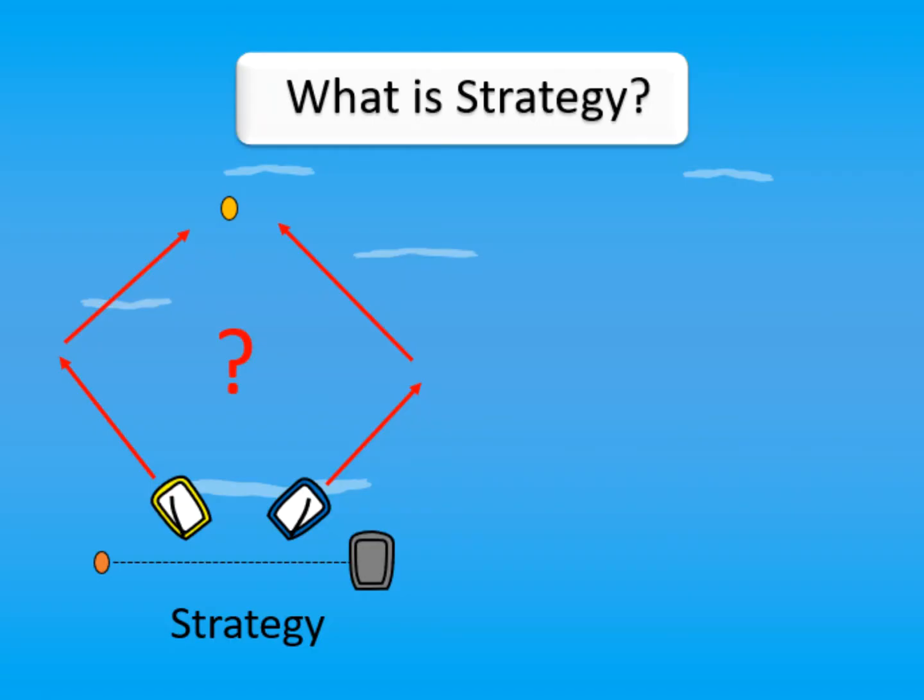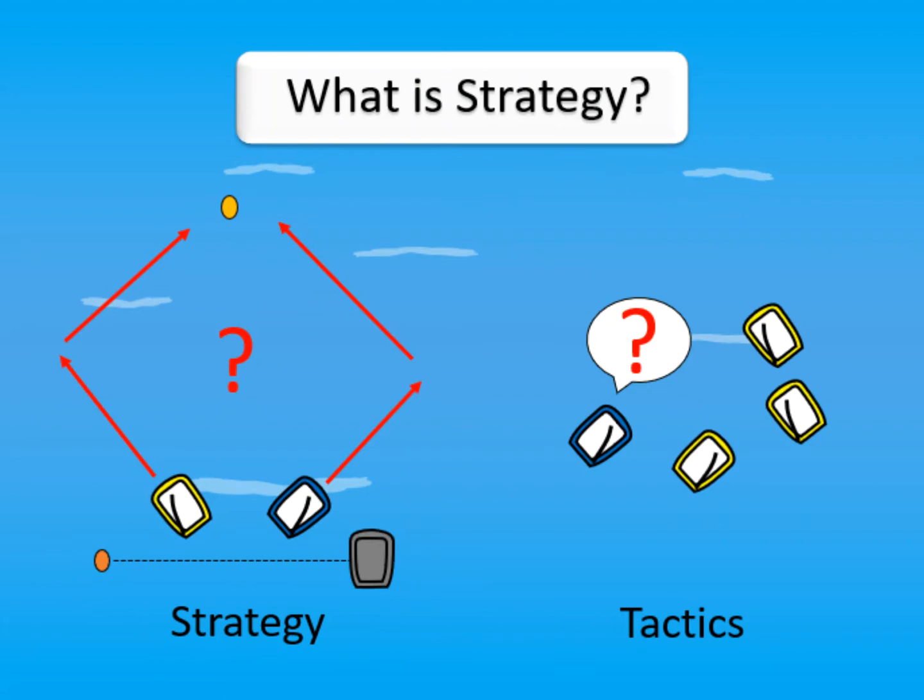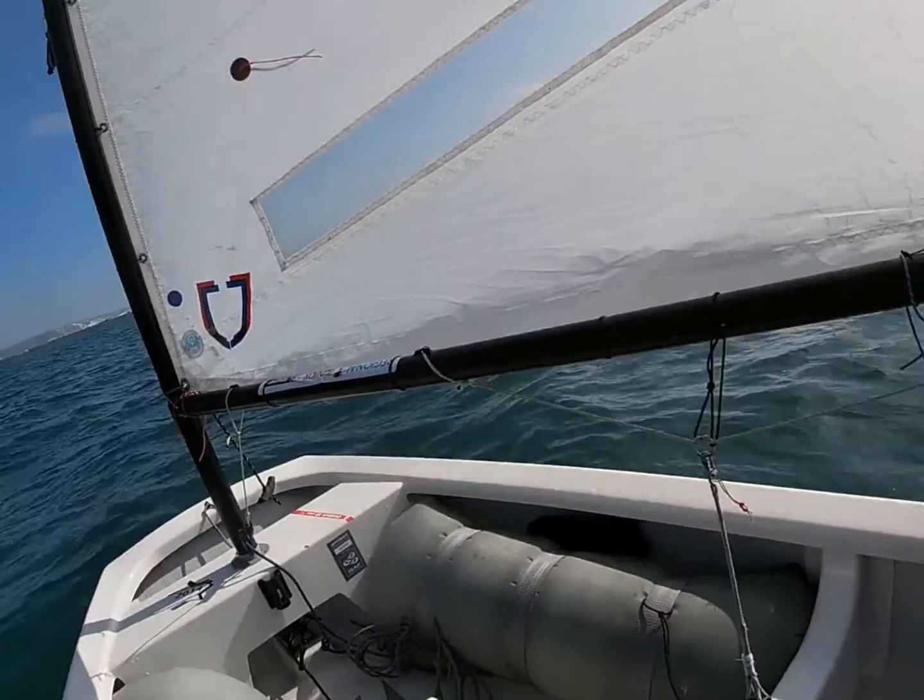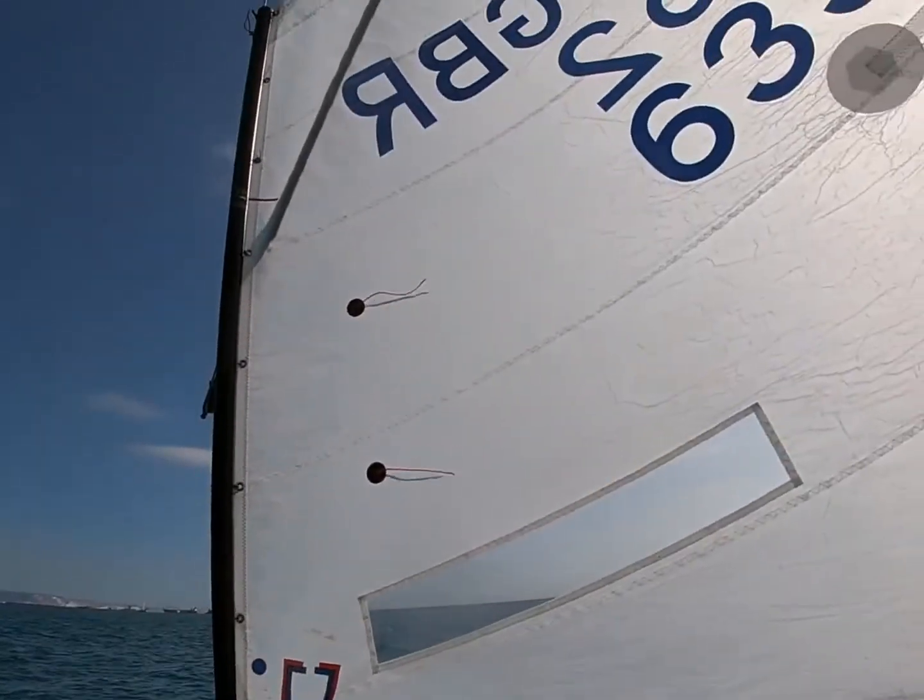Our strategy can be described as the fastest route around the course without thinking about the impact of other boats. This is compared with tactics, which is decisions made around the course due to other boats. So for the purpose of this video, we're going to forget about tactics and purely focus on our strategy.